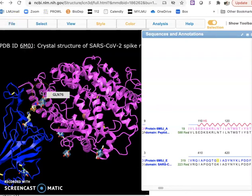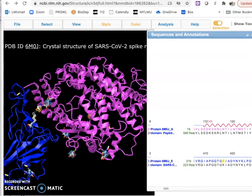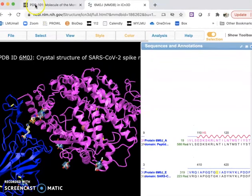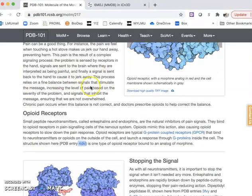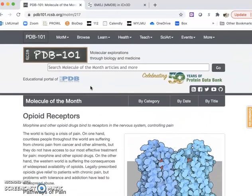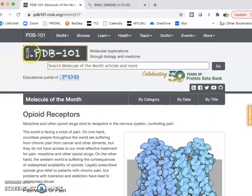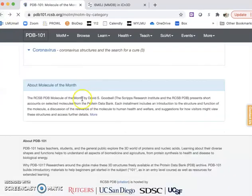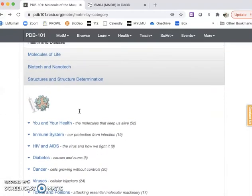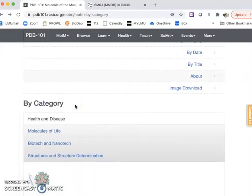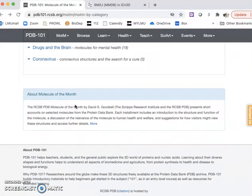If you want to visualize any other protein, you could use this database to just find any molecules you can think of by category. I just clicked by category and went into drugs in the brain, and I picked opioid receptor.